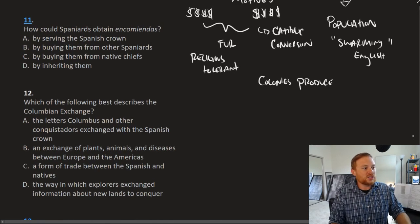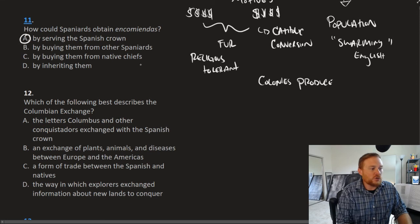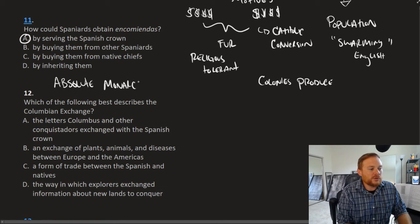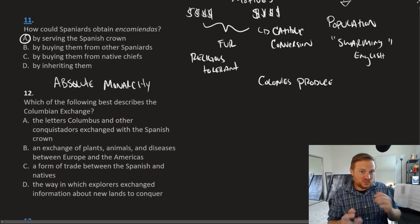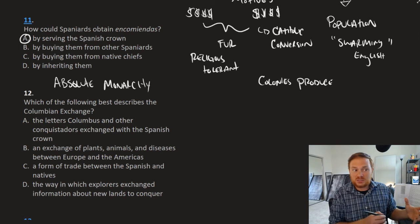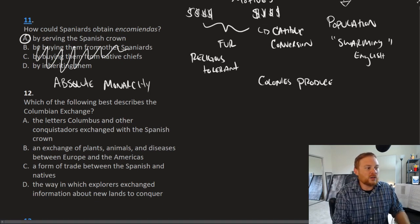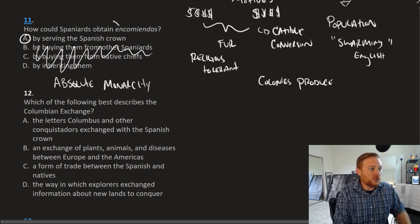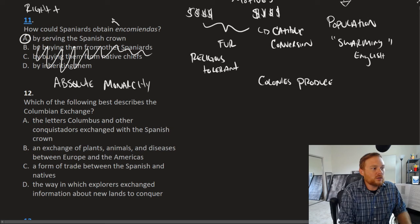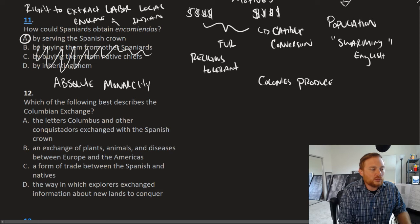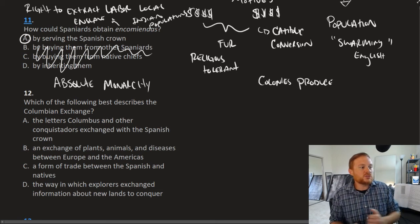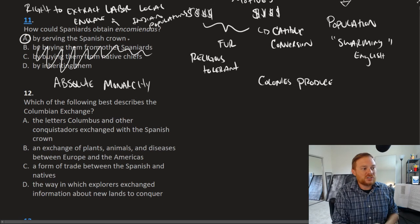Question number 11, how could Spaniards obtain encomiendas? The correct answer is A. In regards to Spanish political system, it is an absolute monarchy. The person in charge of Spain and the colonies is the Spanish king or queen. They have the final say. The same is with France. Whereas in places like England and the Netherlands, they have parliaments or groups and nobles which you have to deal with. They didn't come from any other places. They can only be served from the Spanish crown. If you don't recall what an encomienda is, that is the right to extract labor or the right to enslave local Indian populations. That was given by the Spanish king.